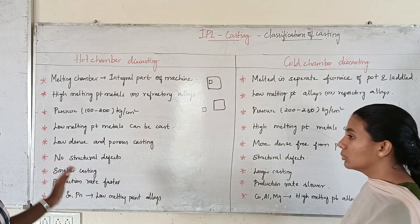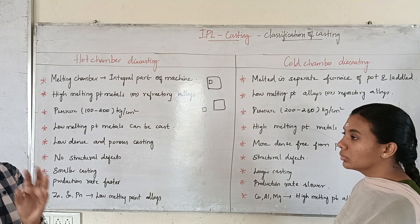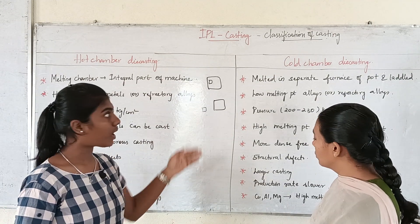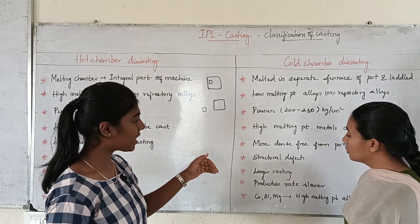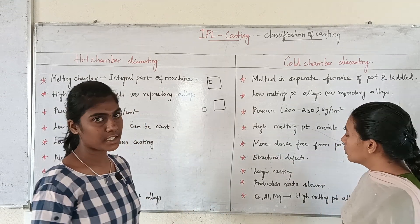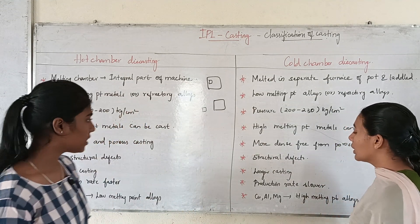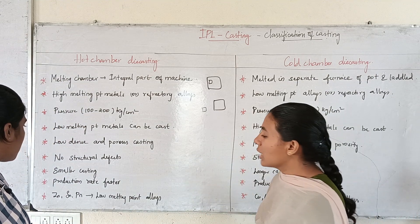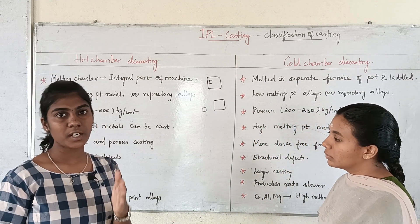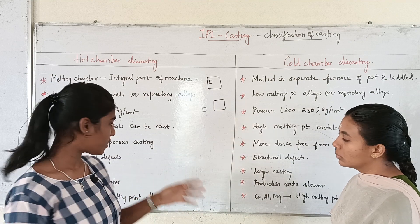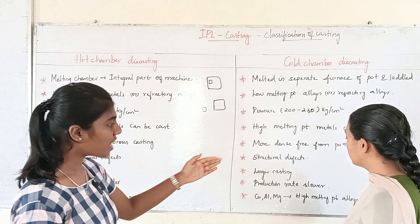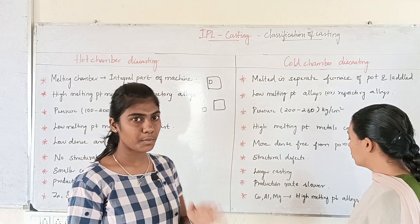Hot chamber is suitable for smaller castings, while cold chamber can handle larger castings. When doing smaller castings, the production rate is higher and faster. For larger castings, the production rate is lower.